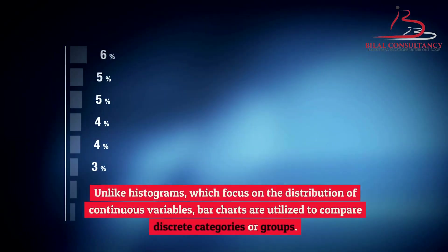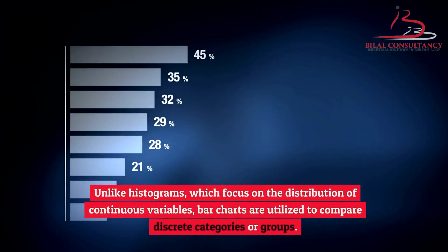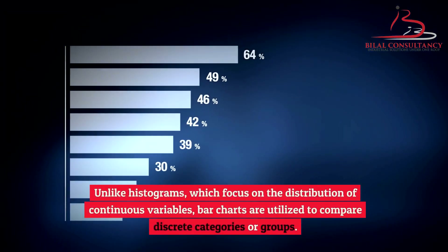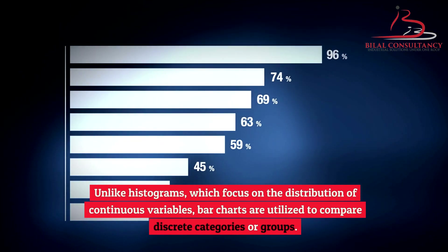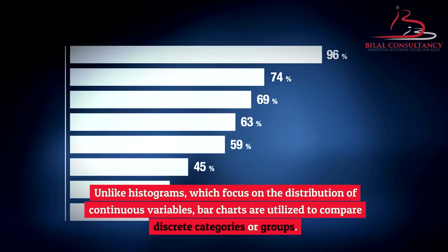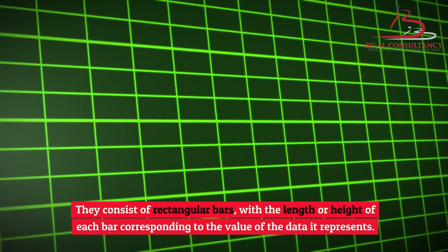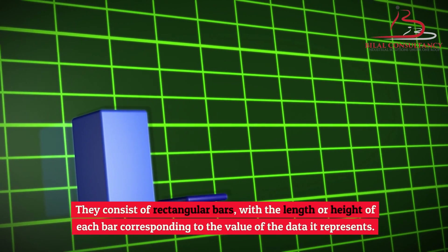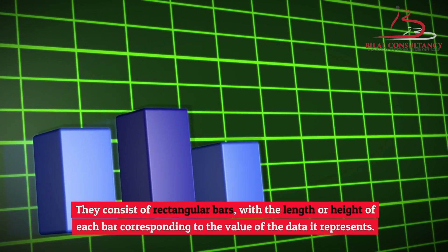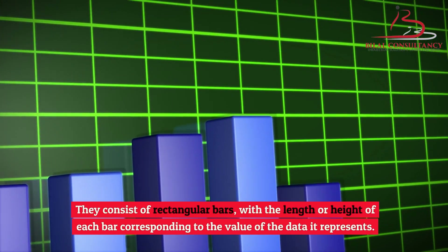Unlike histograms, which focus on the distribution of continuous variables, bar charts are utilized to compare discrete categories or groups. They consist of rectangular bars, with the length or height of each bar corresponding to the value of the data it represents.